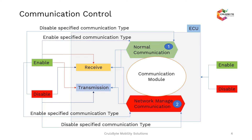By enabling or disabling transmission or reception, you can control which communication type messages go out of or come into the ECU. You can enable transmission of a particular communication type — either normal communication or network management communication — or you can disable a particular communication type using the control type: enable, disable, receive, and transmit.